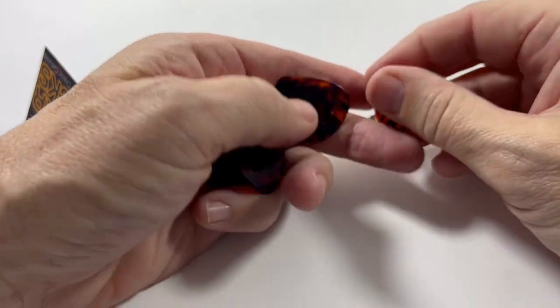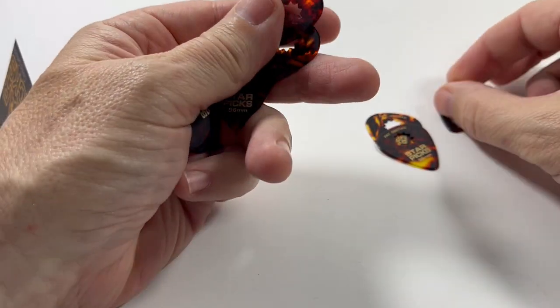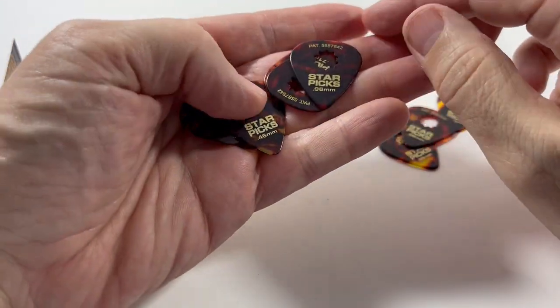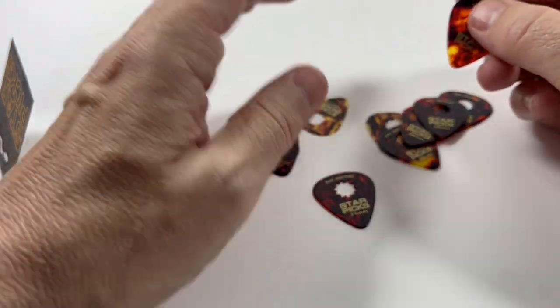This is 0.96 millimeter here, and then 0.71 millimeter also in the variety pack. And of course, we sell 12 packs and 24 packs of each of them as well as the variety pack.